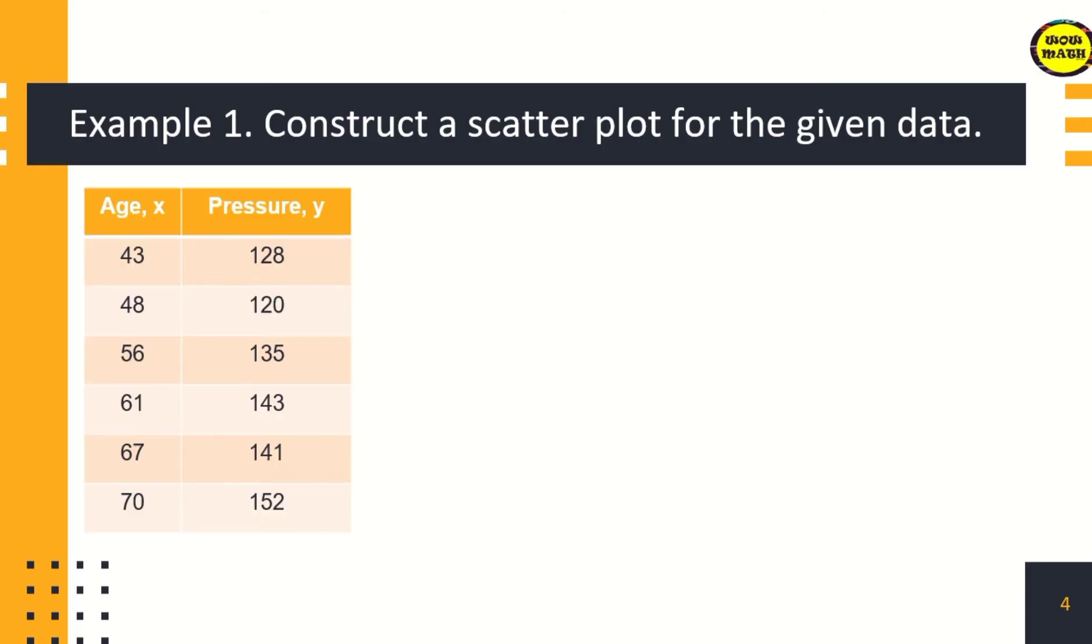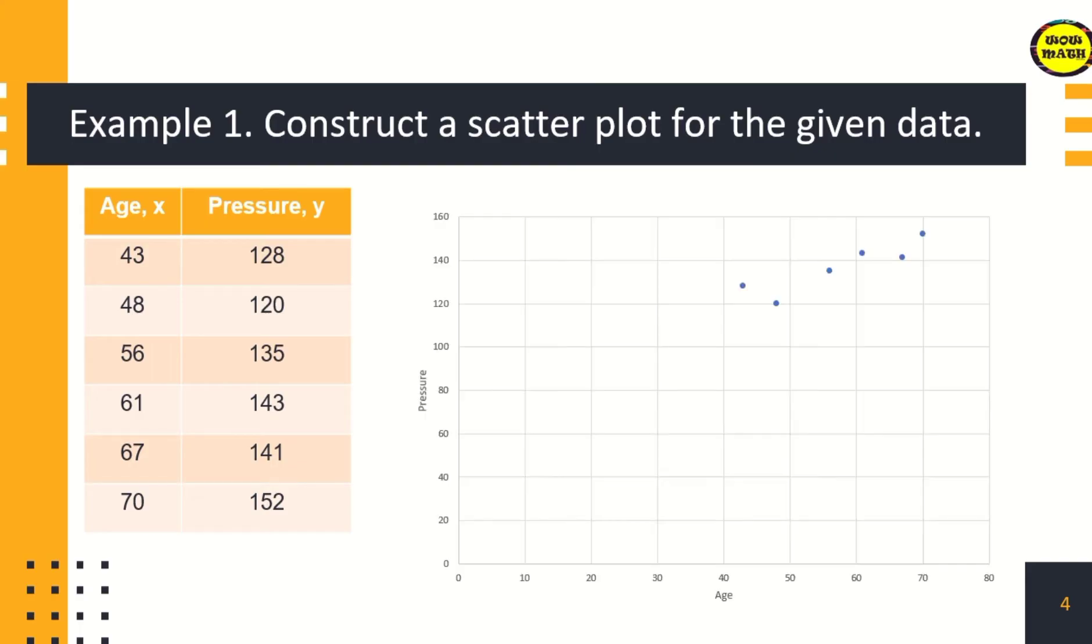For example, we have two variables that we're going to relate: age and pressure. How are you going to construct a scatter plot? You can use Microsoft Excel. Using Microsoft Excel, this is what we will get. You can see those dots. I will show you how to use Microsoft Excel to construct a scatter plot.